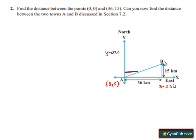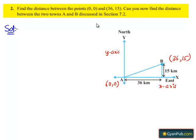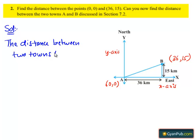Town B is located at a distance of 36 km from the y-axis, so the x-coordinate of town B will be 36. Also, town B is located at a distance of 15 km from the x-axis, so the y-coordinate of town B will be 15. We have already found the distance between (0, 0) and (36, 15) as 39 units, so the distance between the two towns A and B is 39 km.